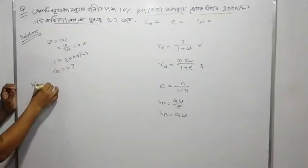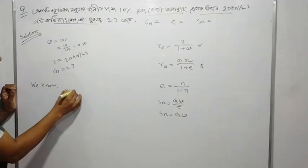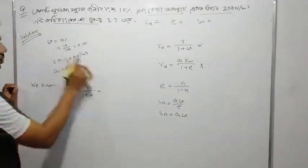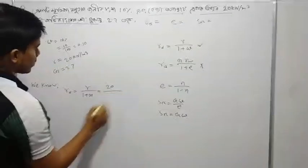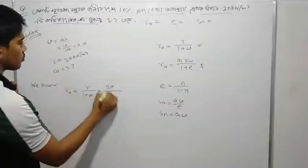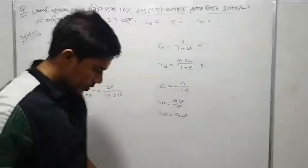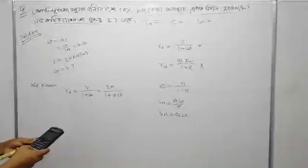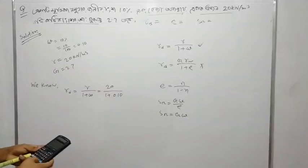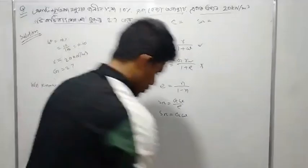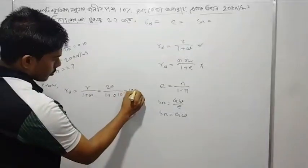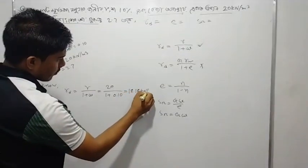We know gamma_d is equal to gamma divided by (1 plus omega). So: gamma_d equals — let's say kN divided by (1 plus 0.10). The calculation gives us 1.10, and the answer comes out to 18 kN per m³ — approximately 18.2 kN per m³.